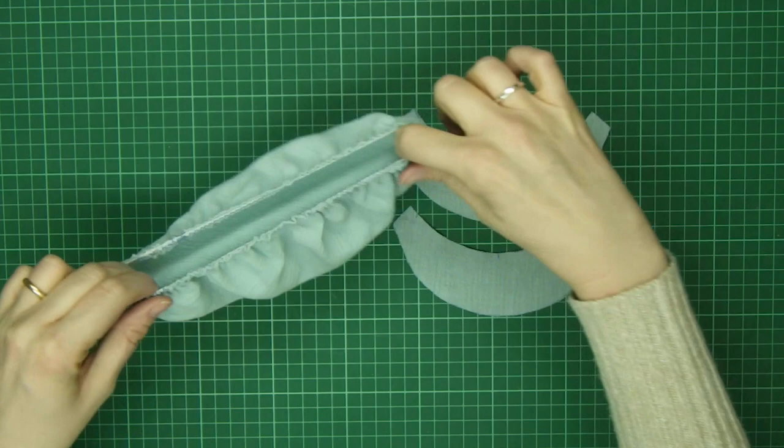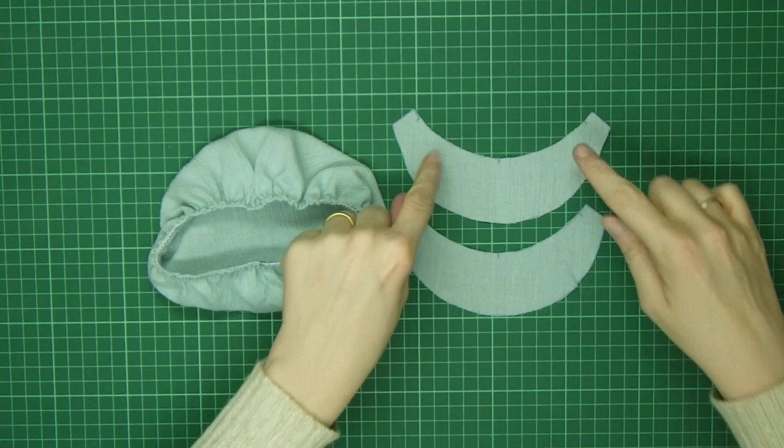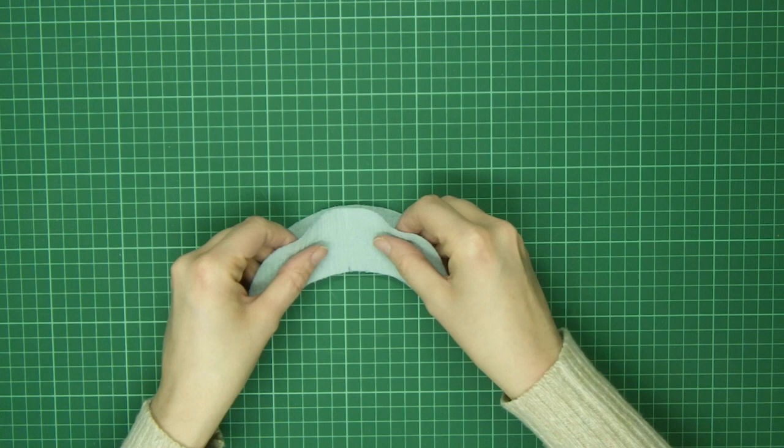And here it is. The bonnet attached to the elastic. And now we're going to work on the peak. So I've got two of these. And I'm going to put them right sides together, wrong sides out.